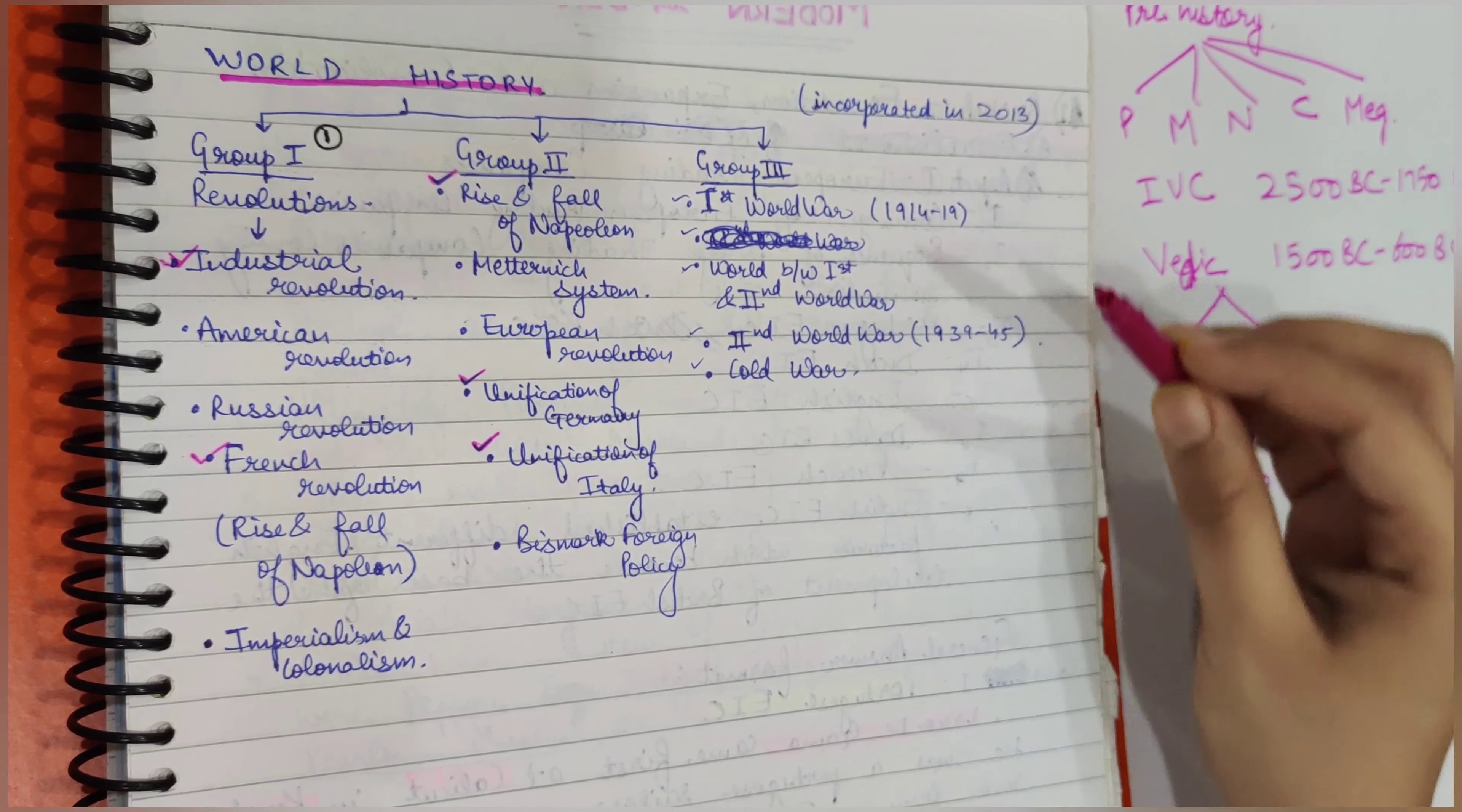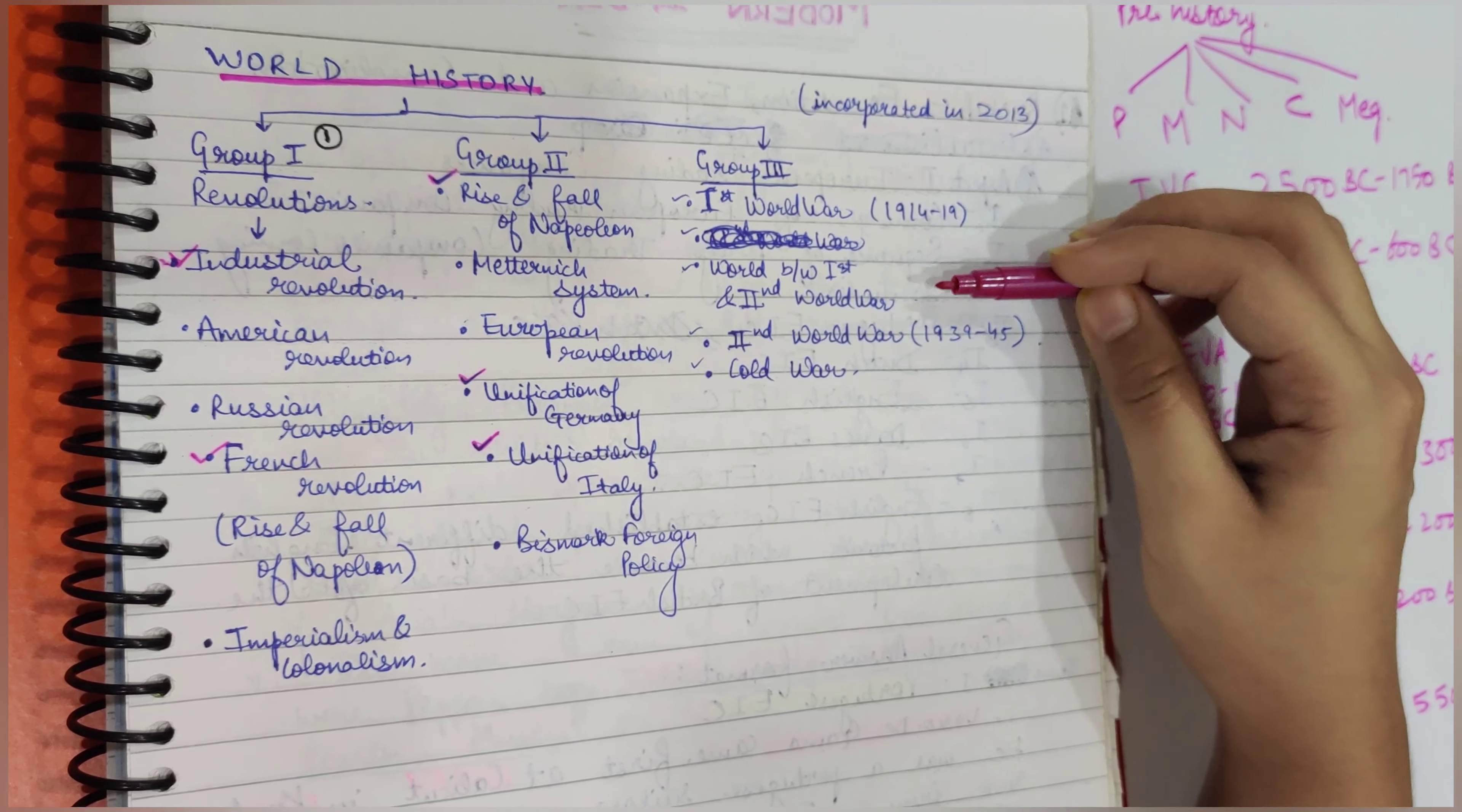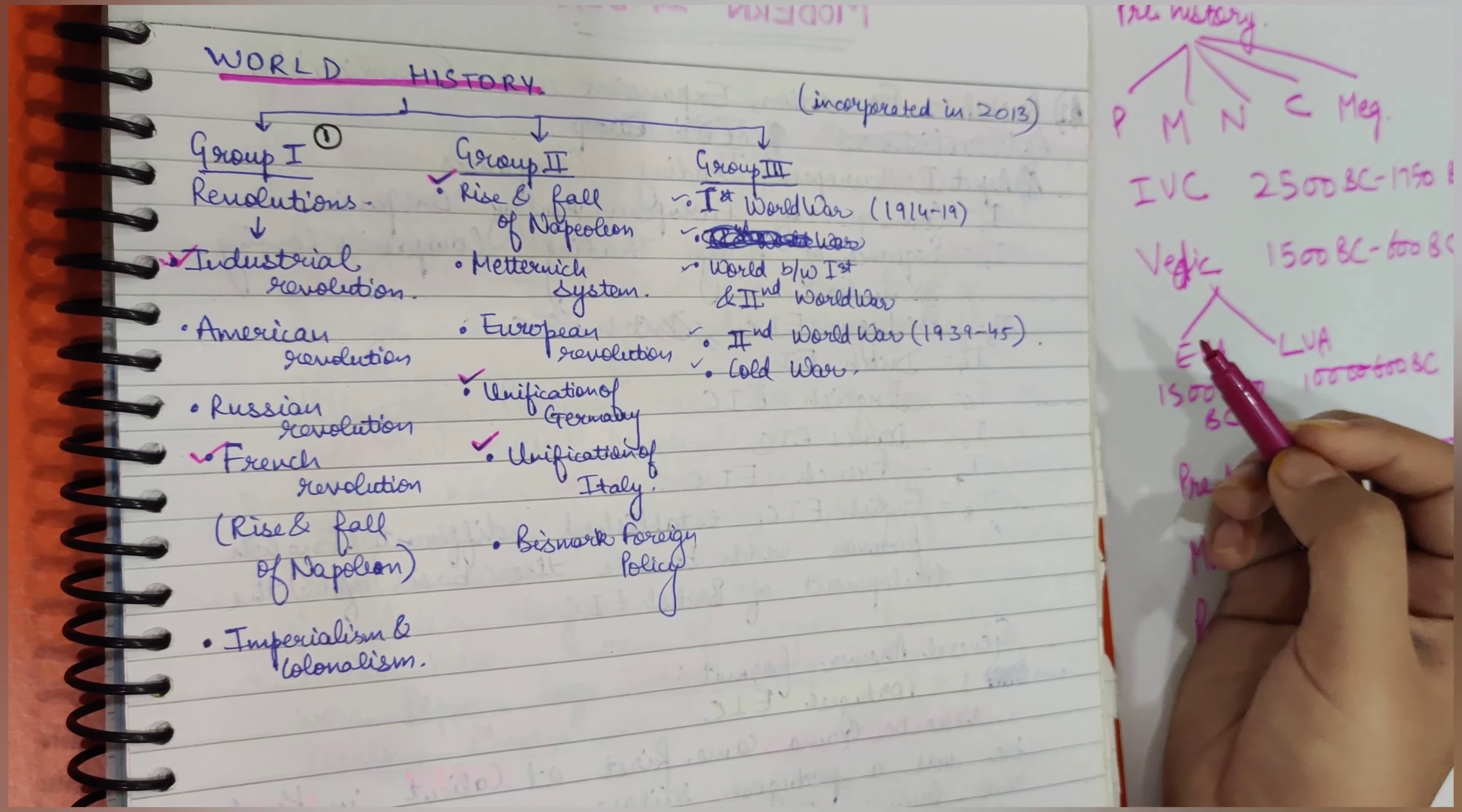In the next part, we'll read about the very important First World War, which was from 1914 to 1919. Then what happened between the First World War and the Second World War. After that, we'll read about the Second World War, which was from 1939 to 1945. Then finally, we'll read about the Cold War, which started 1945 onwards.